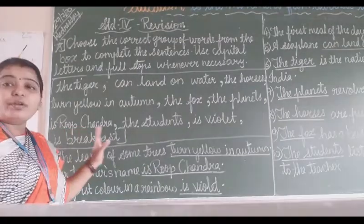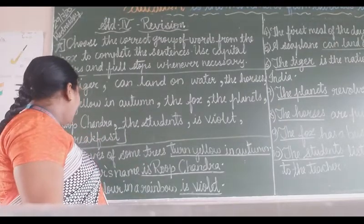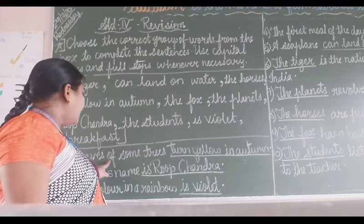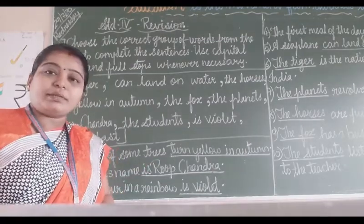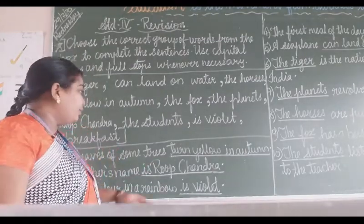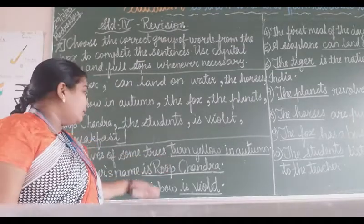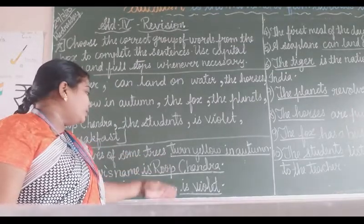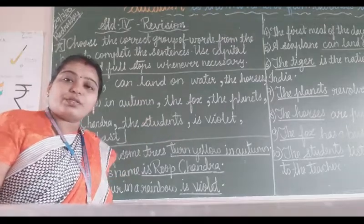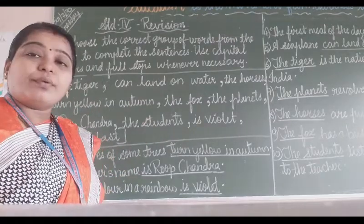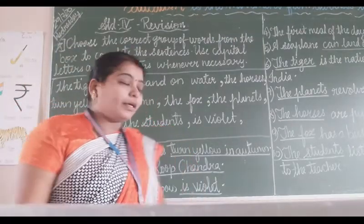In the exam, you will not get the box. The sentence will be given, like 'the leaves of some trees,' and four options will be given to you — like 'turn yellow in autumn,' 'Roopchandra,' 'violet,' or 'breakfast.' From those four options, you have to select the correct one.